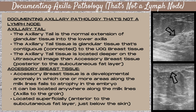Accessory breast tissue is a developmental anomaly in which one or more areas along the milk lines fails to atrophy in the embryo, and it can occur in males and females. During weeks five to six of development, streaks develop from the axilla to the groin and evolve into mammary ridges known as the milk lines. During weeks six to eight, most of the bilateral mammary ridges atrophy except in the pectoral region — the future site of the breast buds. Accessory breast tissue can occur anywhere along the milk lines where the tissue fails to atrophy during embryological development.